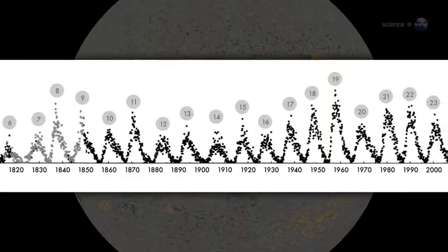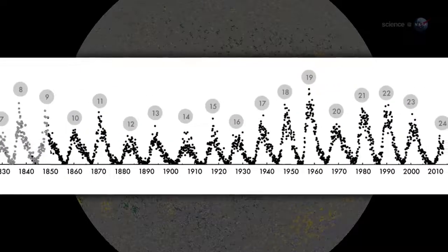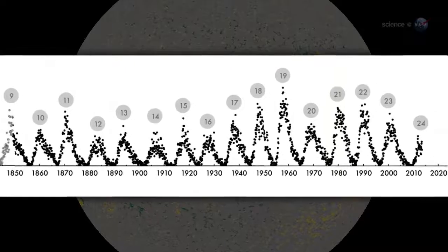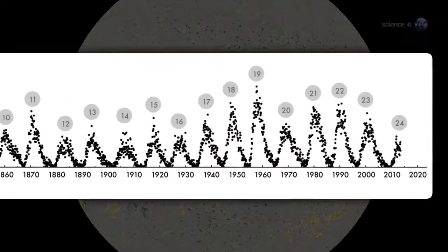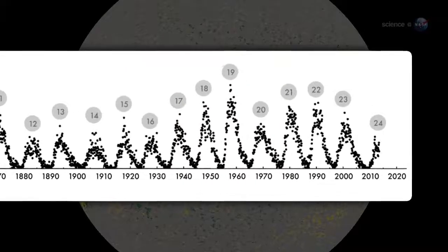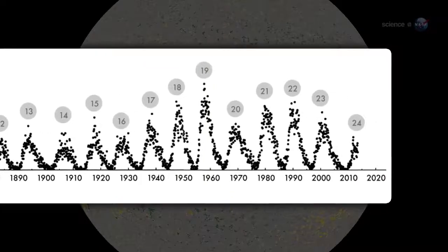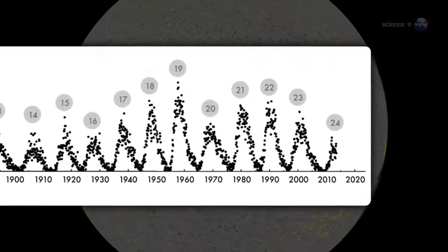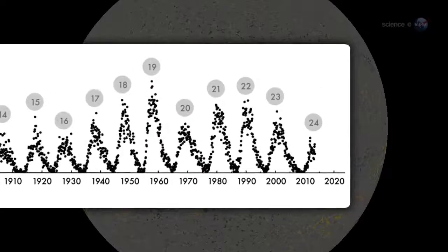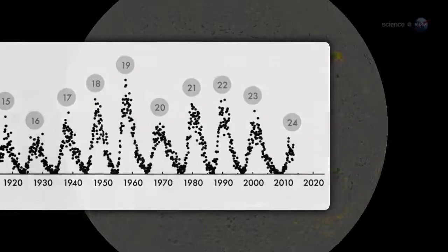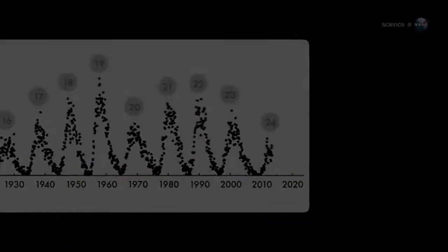The Sun's magnetic field changes polarity approximately every 11 years. It happens at the peak of each solar cycle, as the Sun's inner magnetic dynamo reorganizes itself. The coming reversal will mark the midpoint of solar cycle 24. Half of Solar Max will be behind us, with half yet to come.